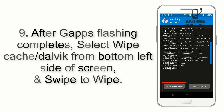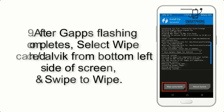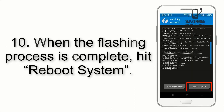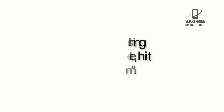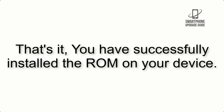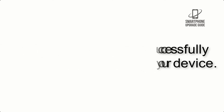Step 9: After GApps flashing completes, select Wipe Cache and Dalvik from the bottom left side of the screen and swipe to wipe. Step 10: When the flashing process is complete, hit Reboot System. That's it — you have successfully installed the ROM on your device.